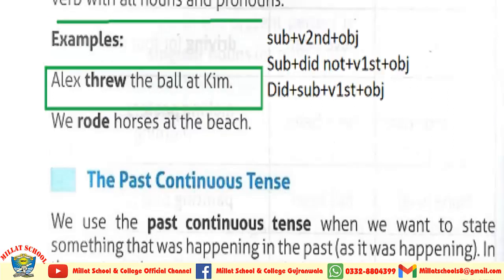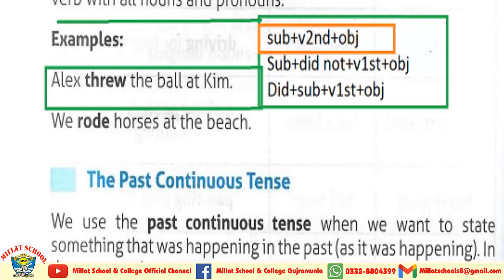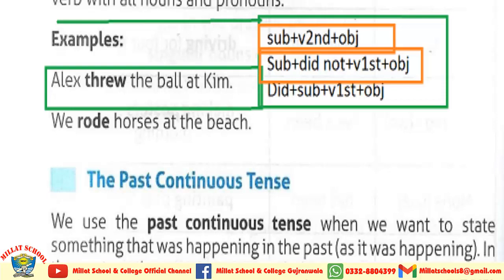Let's discuss the structure of affirmative, negative, and interrogative sentences. In an affirmative sentence: Subject + second form of the verb + object. In a negative sentence: Subject + did not + first form of the verb + object. In an interrogative sentence: we start with the helping verb 'did', then subject + first form of the verb + object.